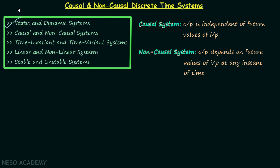In the last lecture we had discussion on static and dynamic discrete time systems. Now in this lecture we will have discussion on causal and non-causal discrete time systems. A causal system is a system in which the present output is independent of future values of input. So if the present output is independent of future values of input, we will say the system is a causal system.